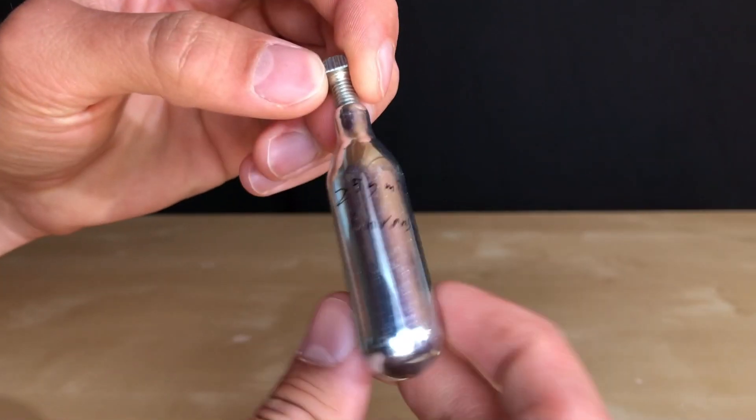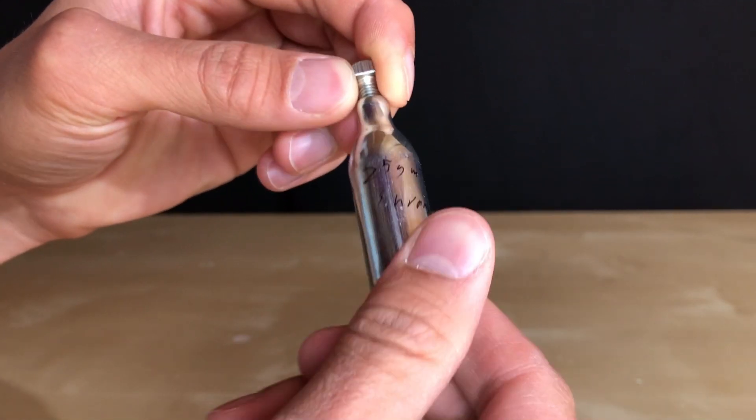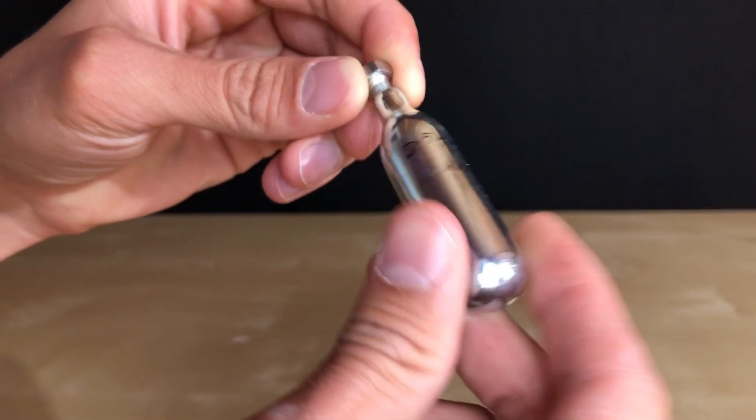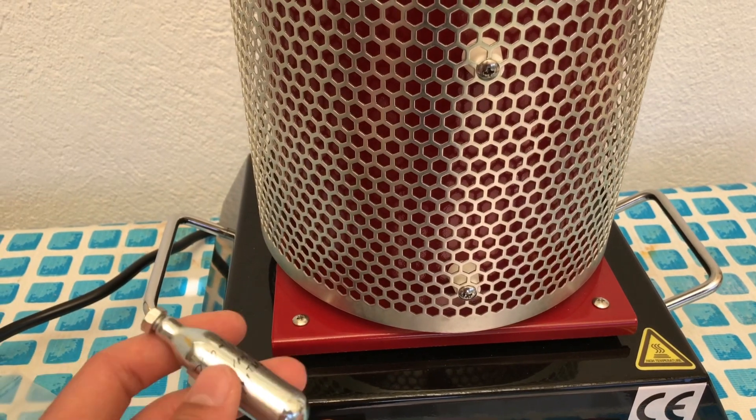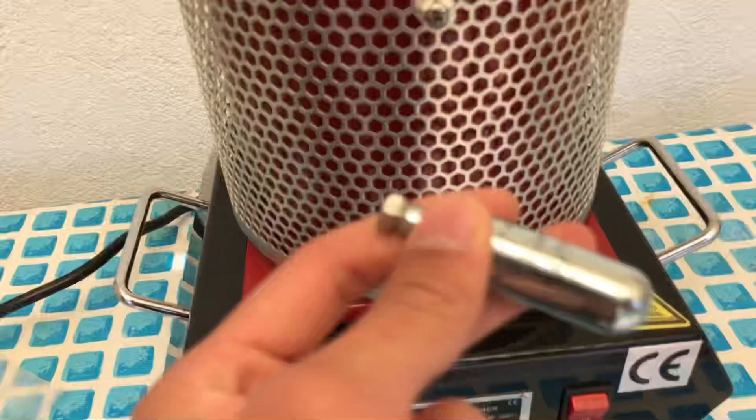The reaction vessel must be able to withstand high temperatures and it must keep the air out. The easiest method I found was to use one of these steel containers. Into the top I cut the thread and the screw is also made from steel.